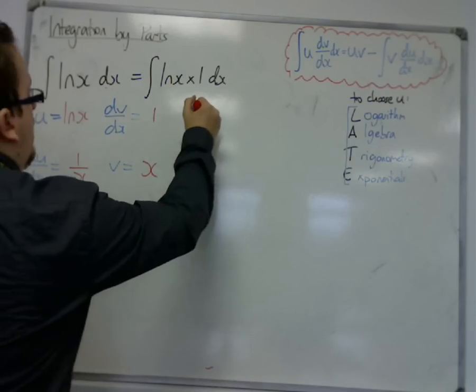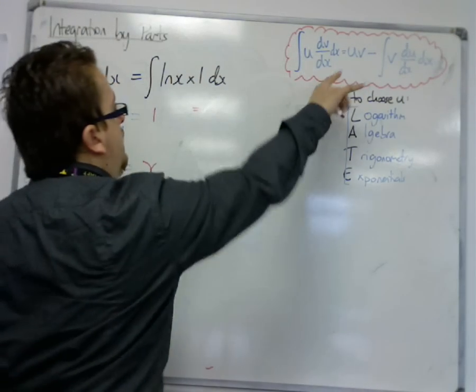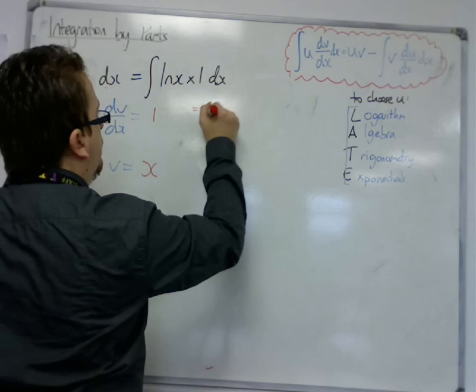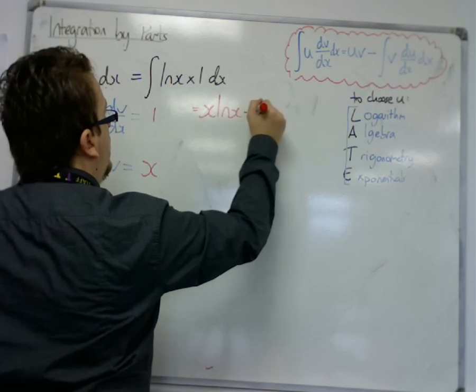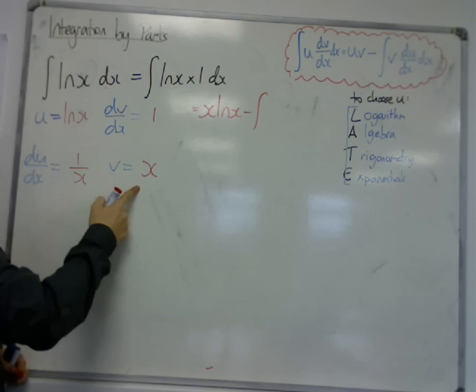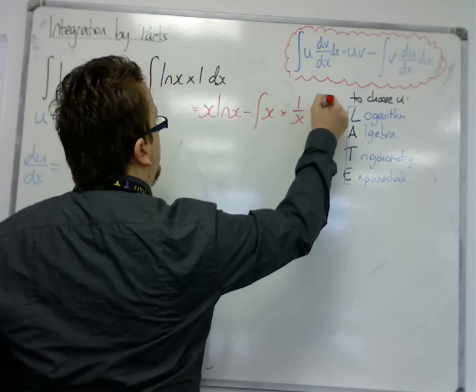So if I substitute this directly into our formula up in the top right here, we have u times v, so x times log x, take away the integral of v du by dx. So x times 1 over x dx.